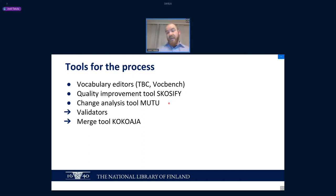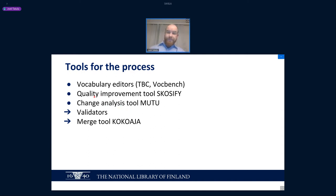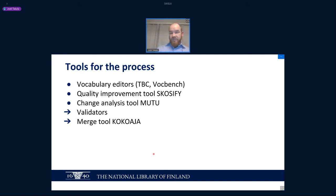Because each of the domain vocabularies are linked individually to the central ontology, we need a change analysis tool which tracks changes in the central ontology that are relevant for each domain vocabulary. For that we use the change analysis tool Mutu. Both Skosify and Mutu are developed in our research group. When we start combining these together, we need validators which check that we are actually following the design guidelines for the ontologies at a higher level. Once that checks out, we feed them through the merging tool Kokoaja, and the end result is a holistic ontology that is simple enough to actually work.